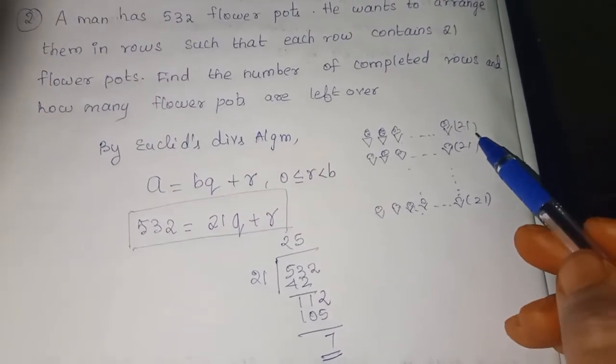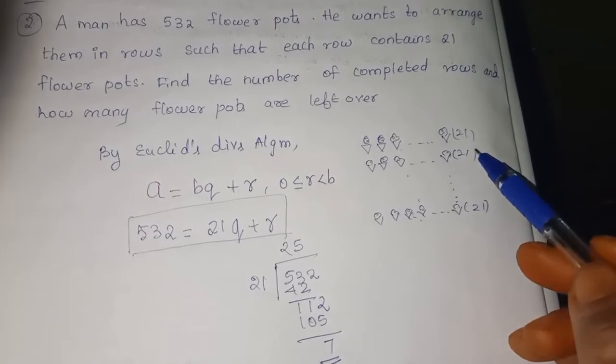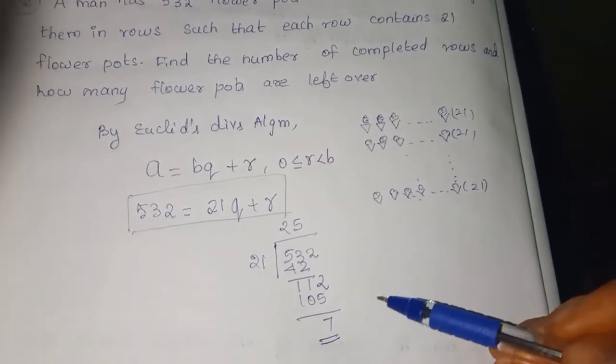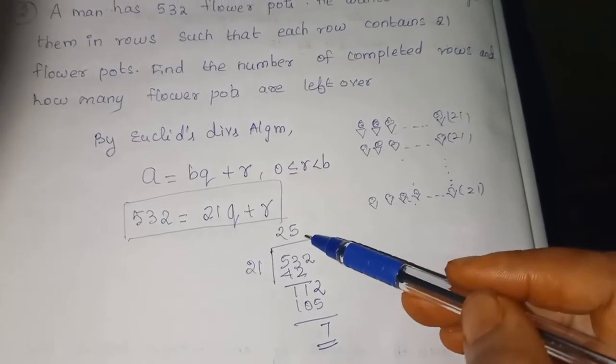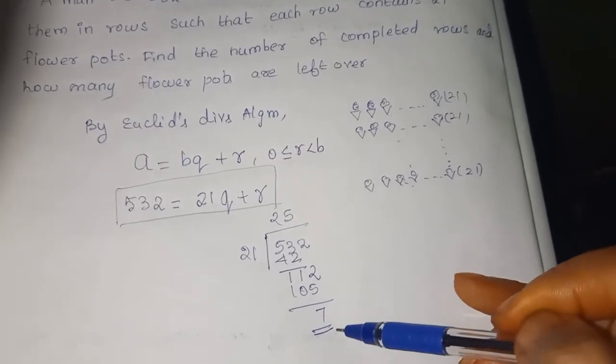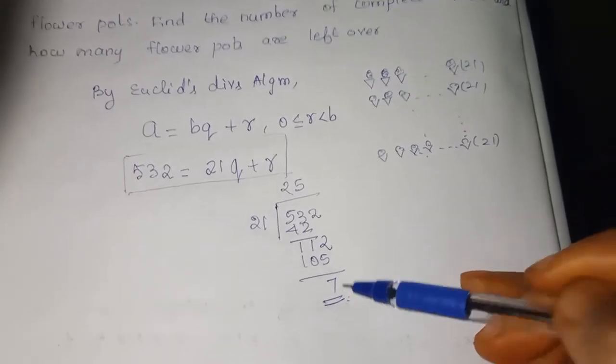He is arranging in rows. Each row contains 21 flower parts. Even though he is arranging in rows, he is getting how much left over? 7 parts left over. This is our remainder.